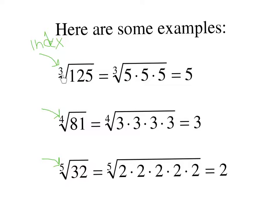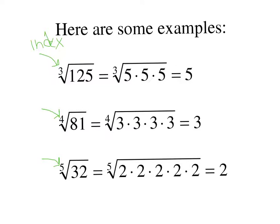The easiest way to do these higher roots is to use a factor tree to break these down into prime factors. When you break down 125, you end up with five times five times five. So what number has three factors that multiply to make 125? That would be five — the cubed root of 125 is five. The fourth root of 81 is three. The fifth root of 32 is two, because five twos multiplied together make 32.